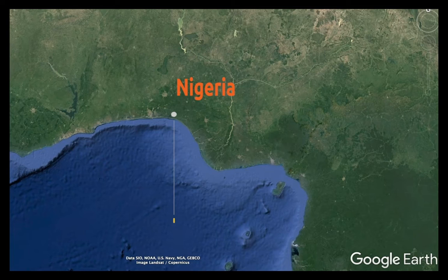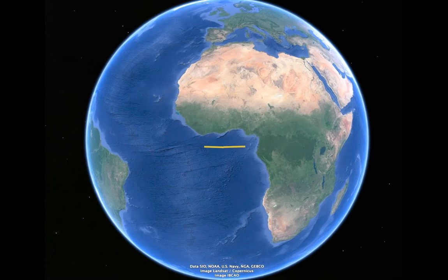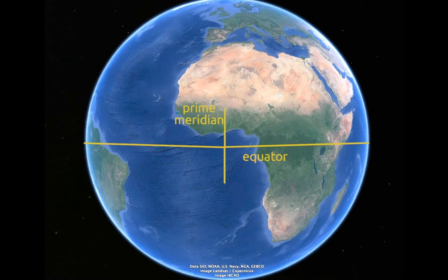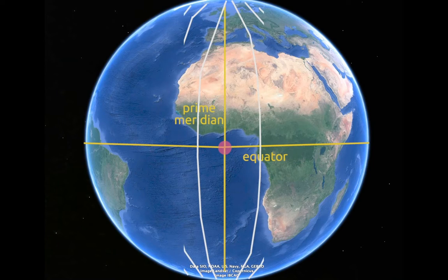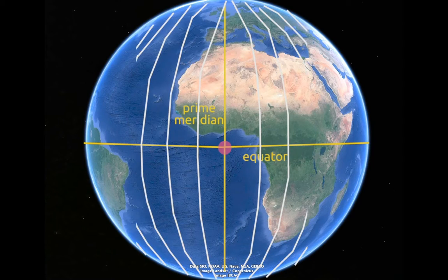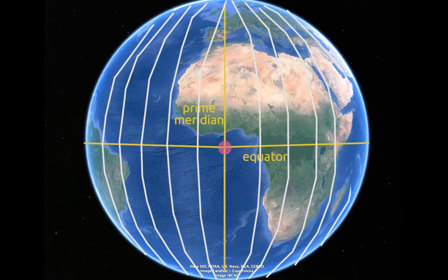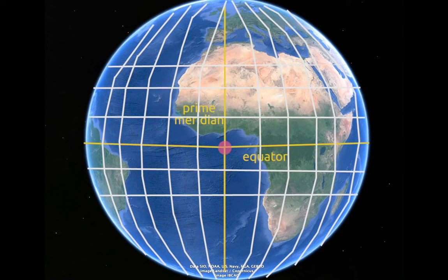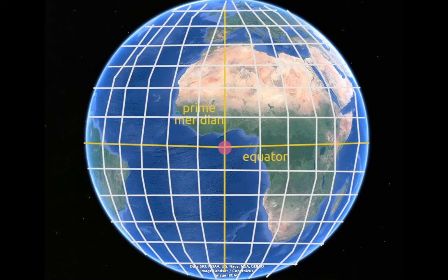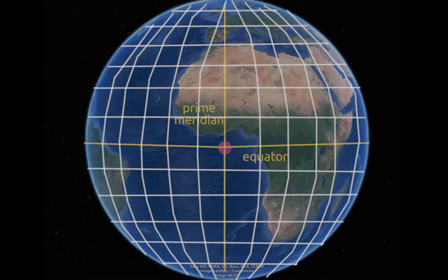And what they created was a coordinate grid system, with the equator serving as the x-axis and the prime meridian serving as the y-axis. That intersection between the lines is like the origin. Scientists and cartographers also divided up the equator and the prime meridian into units — or as they call it, degrees — creating the whole grid system.